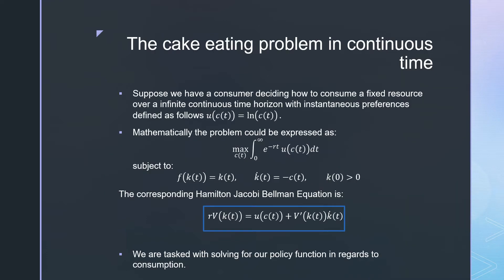The setup of this problem is as follows. Suppose we have a consumer deciding how to consume a fixed resource over an infinite continuous time horizon with instantaneous preferences defined as u(ct) = ln(ct).